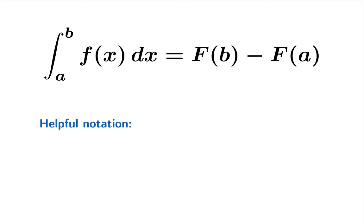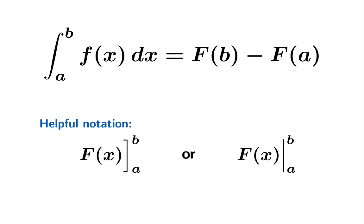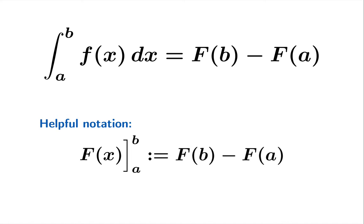Now here's some helpful notation. This symbol can be thought of as a spring-loaded version of F(b) minus F(a) — you take F(b) and F(a) and subtract. It's very helpful when concentrating on finding an antiderivative to hold off the actual input of the endpoints for a moment, using this bracket notation with a and b, and then move on from there.